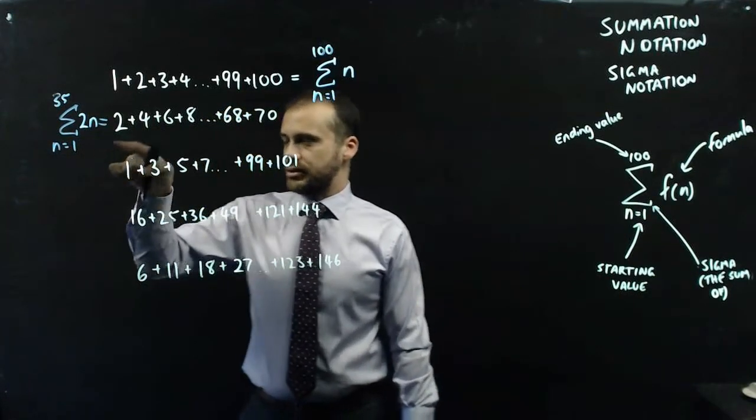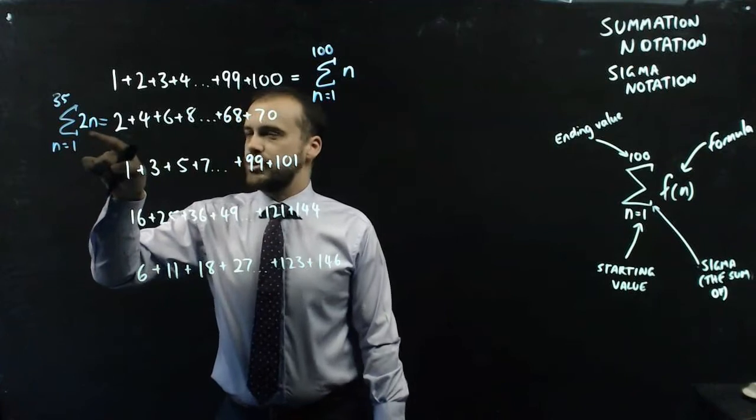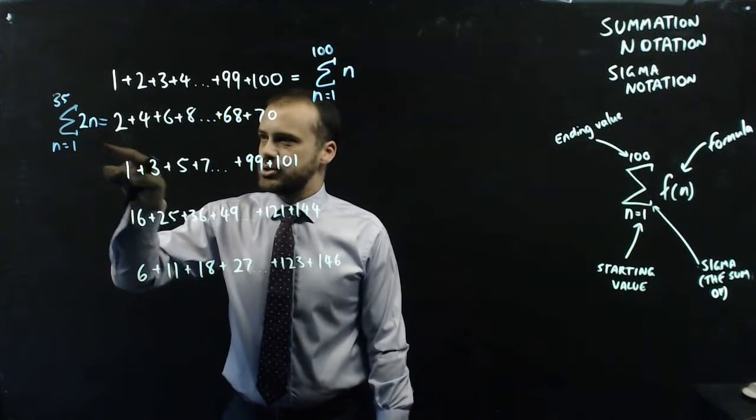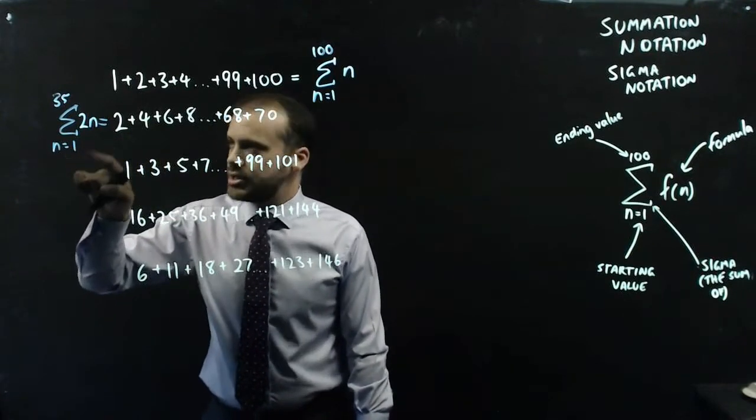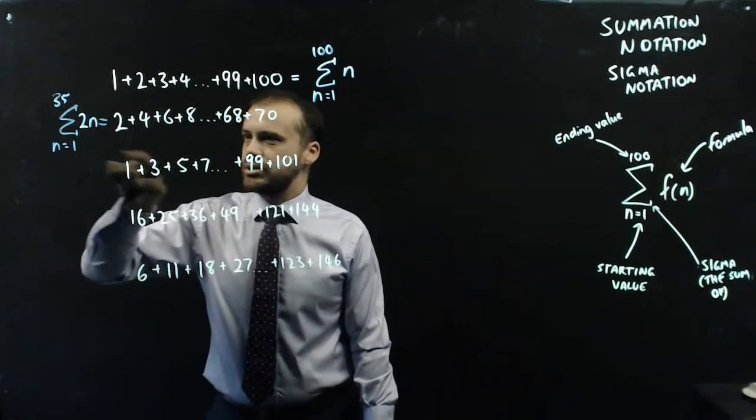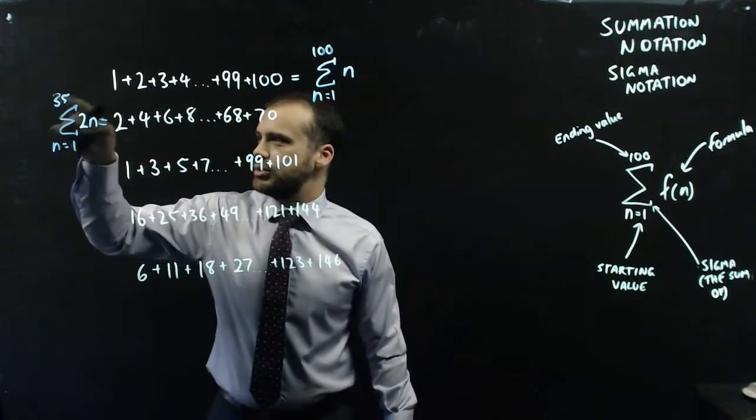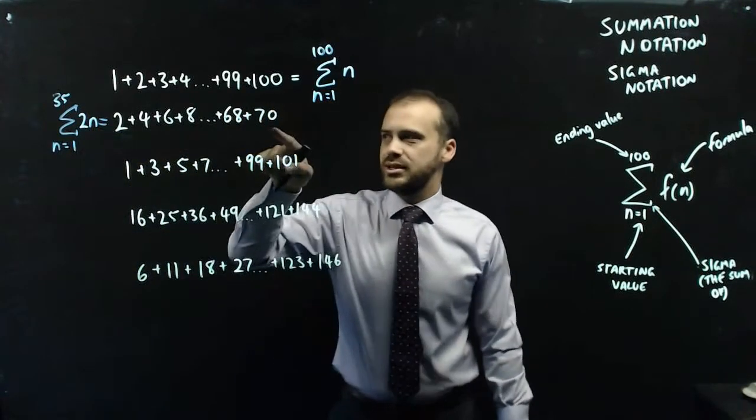That means I'm going to put 1 into 2n, and that's going to be 2 times 1, which will be 2. I'm going to put 2 into 2n, that's going to be 2 times 2, which is 4. I'm going to put 3 into 2n, and that's going to be 2 times 3 is 6. And so on, all the way up to 2 times 35, which is 70.